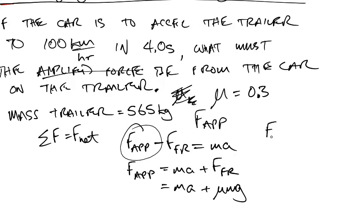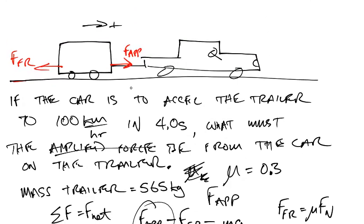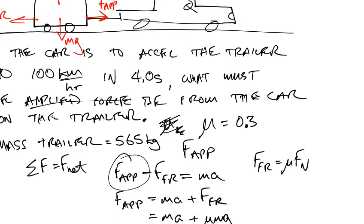Remember, force of friction general equation is mu Fn. But in this case, you see, the normal force Fn and gravity are going to be equal and opposite. So Mg is going to equal Fn. So in this particular situation, because we're on a horizontal surface, force of friction is going to be equal to mu Mg. So I've put that in there.